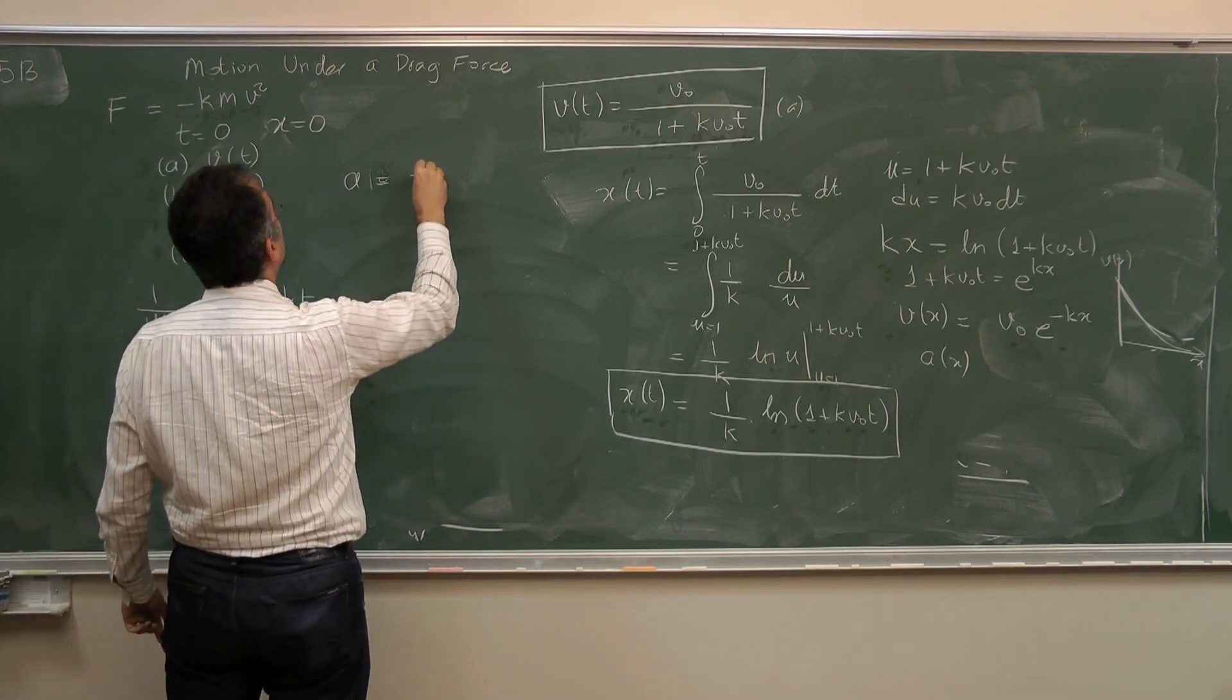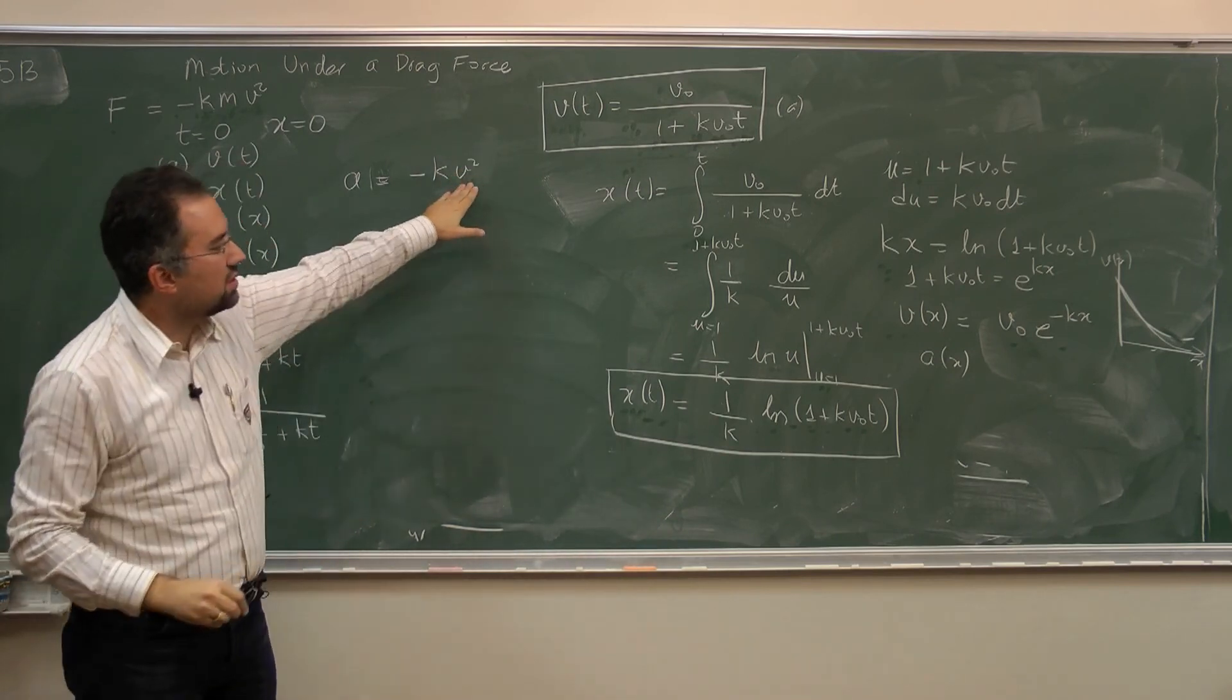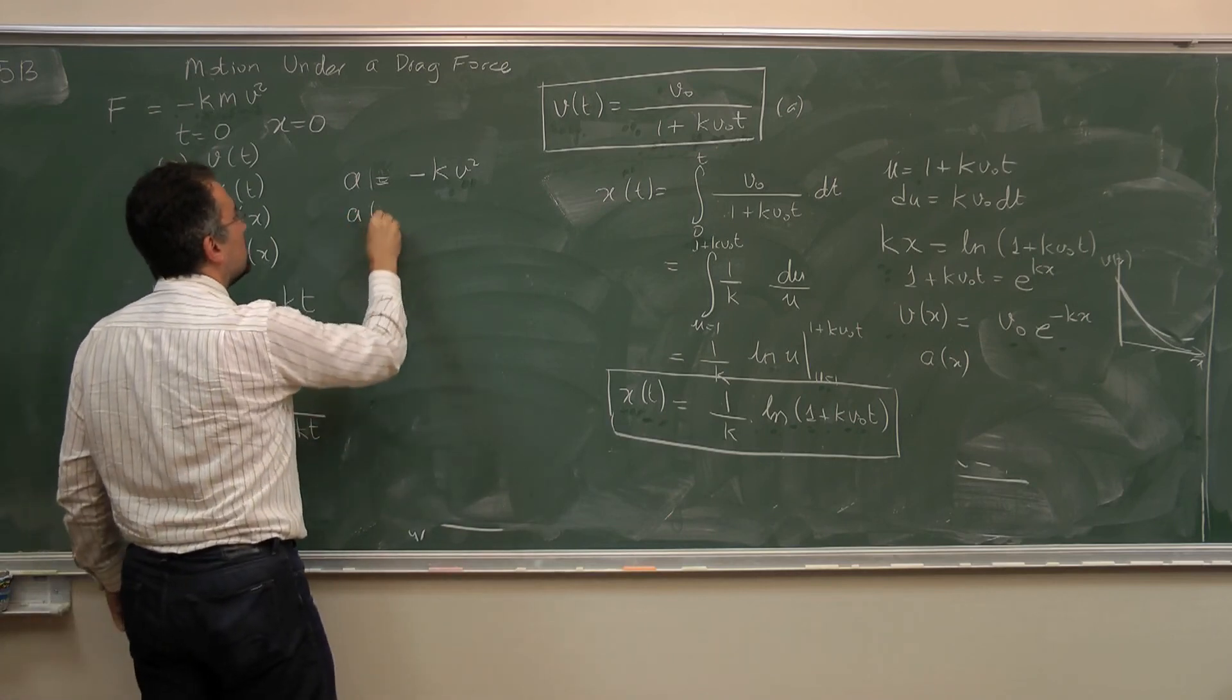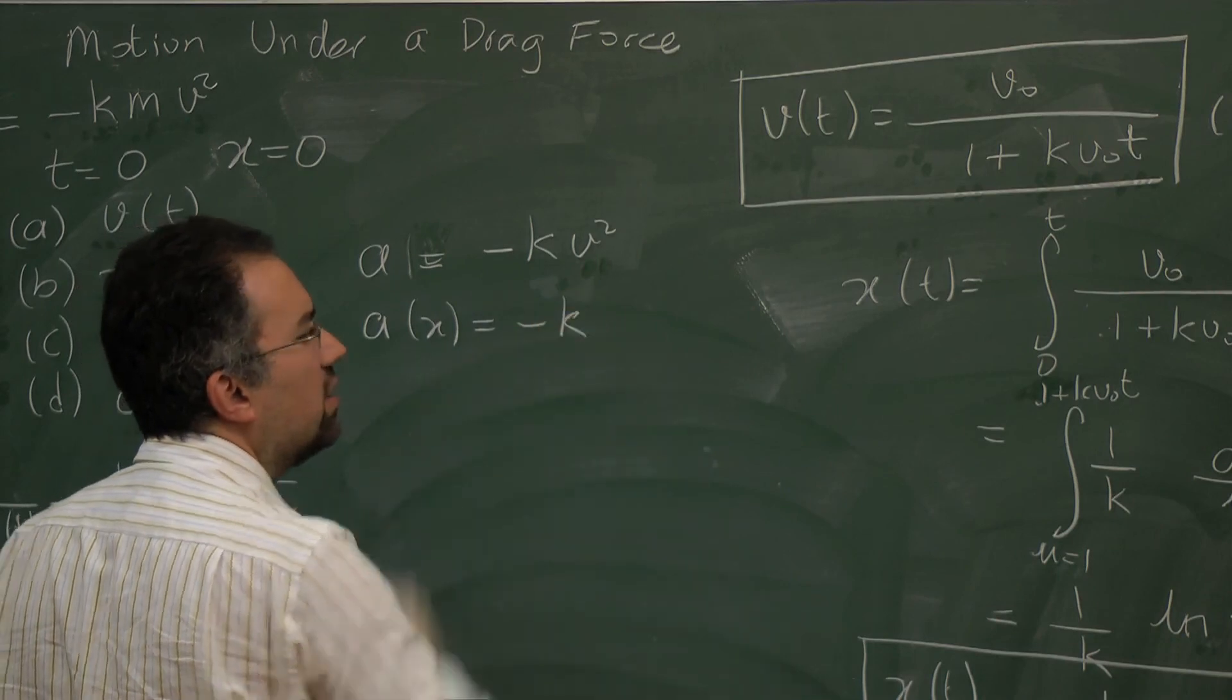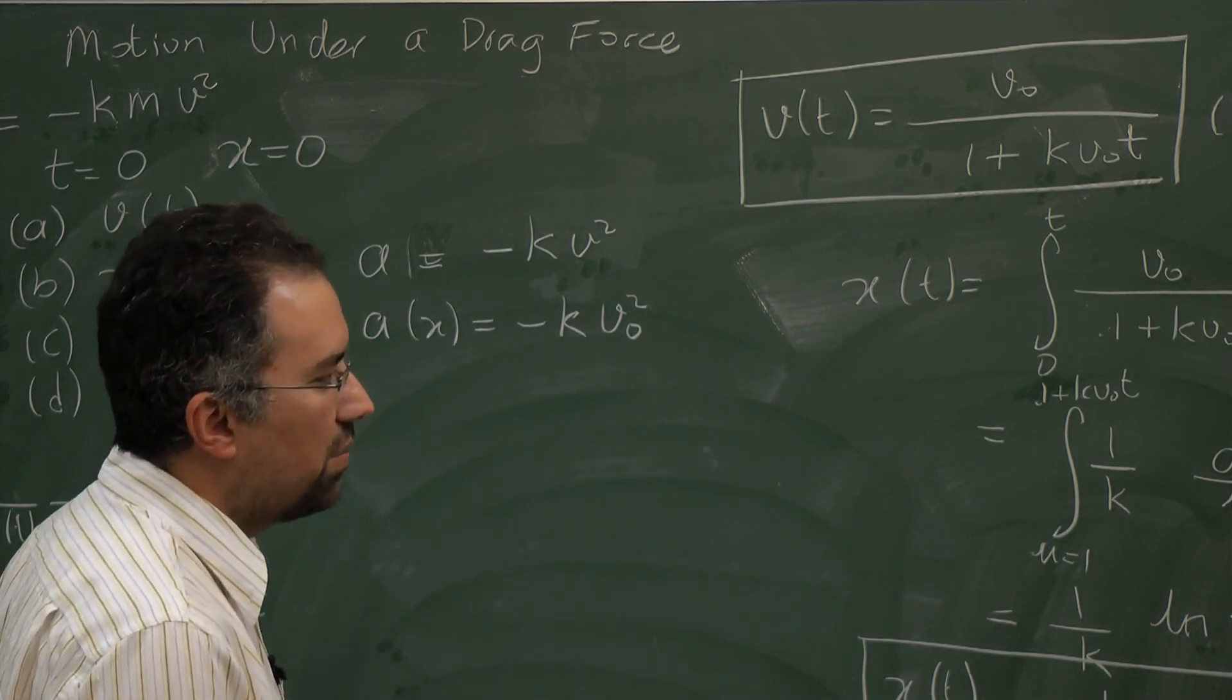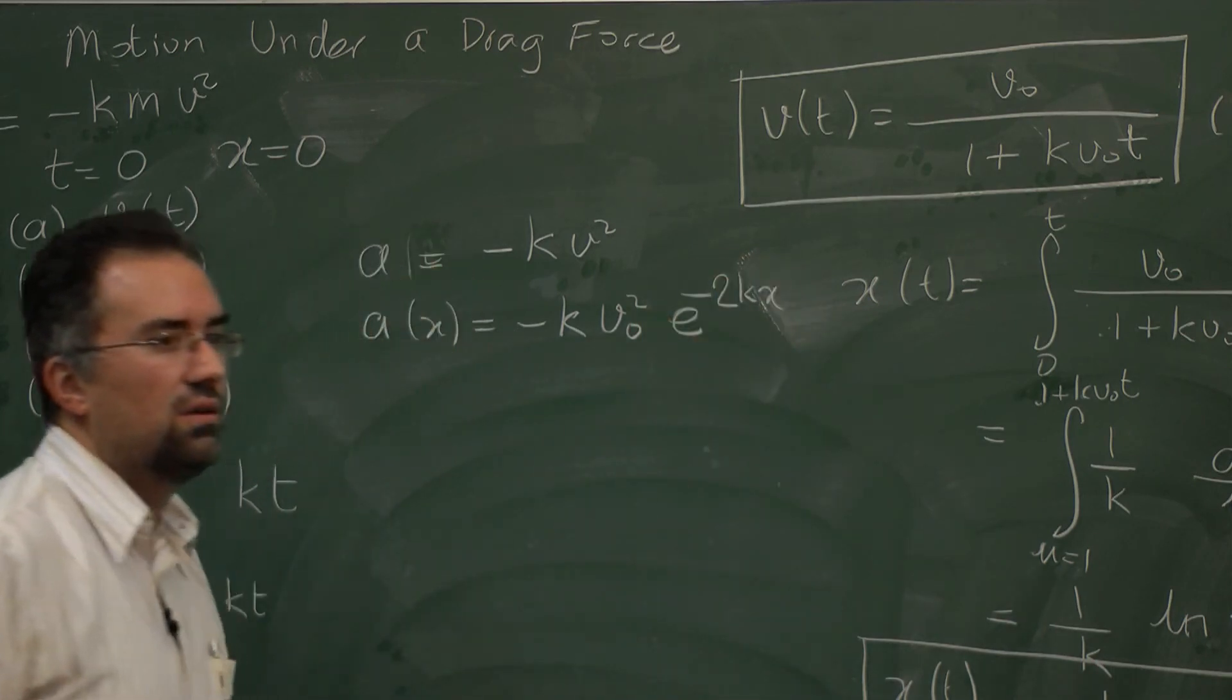So this is minus k v squared. Now since I know the speed as a function of position, it's very easy to plug it in and find acceleration as a function of position. It's just minus k v squared. It's then minus k v0 squared e to the minus kx squared, which is just minus k v0 squared e to the power minus 2 kx.